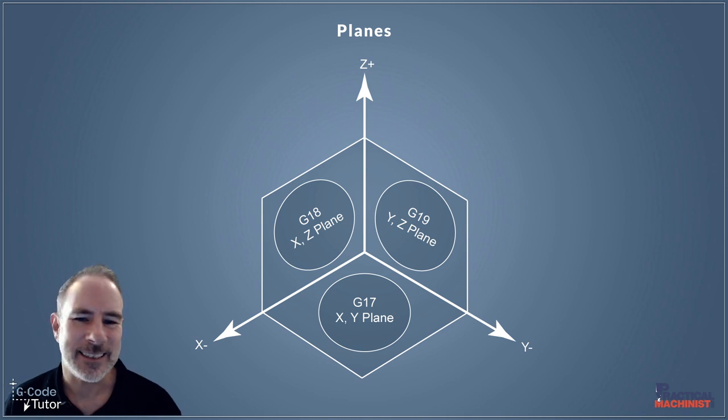If we're working in the standard Z-up configuration, our standard plane would be G17, and this is normally the plane that we default to when we start our program. Then at different stages through the program, we may switch out planes depending which area we are cutting and working on.